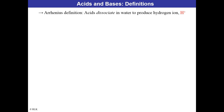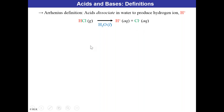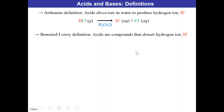Let's start with the definition of an acid. The Arrhenius definition states that acids dissociate to produce the hydrogen ion H+. For example, hydrogen chloride in the gas phase with water present will dissociate into H+ and Cl−, a cation and an anion. That cation H+ is sometimes referred to as a proton.